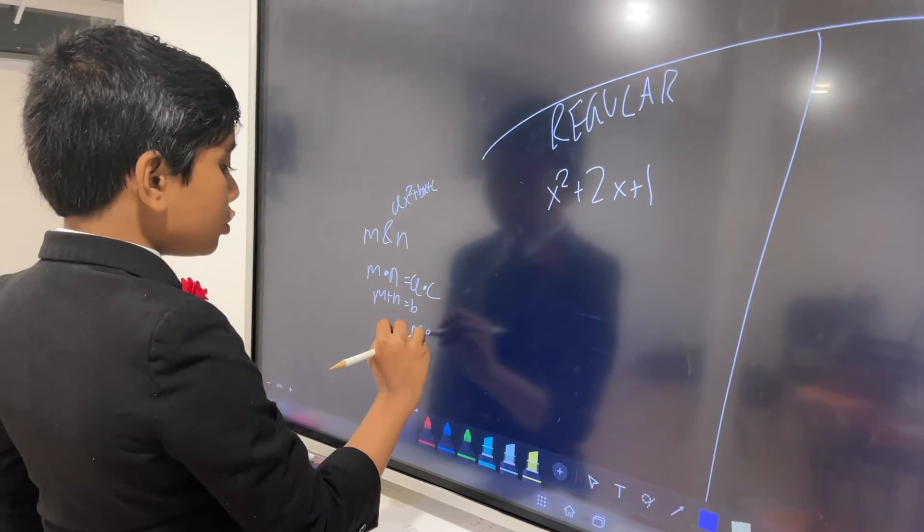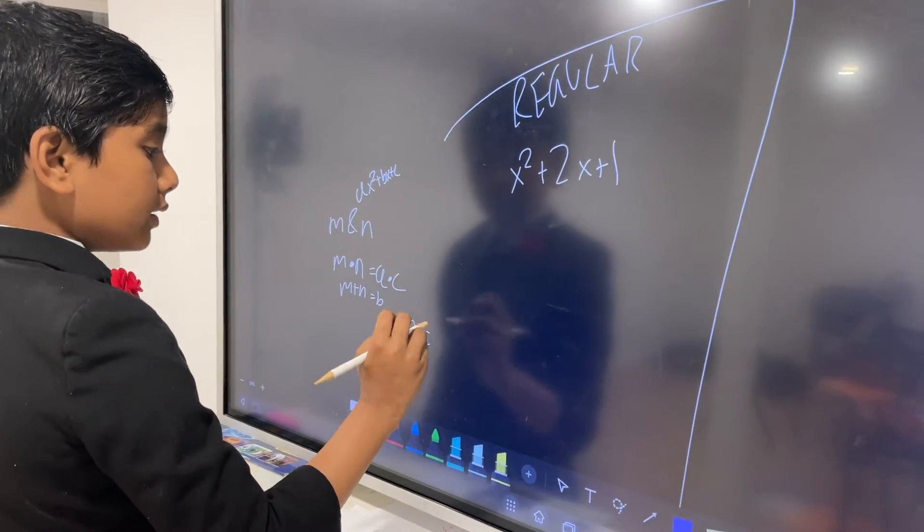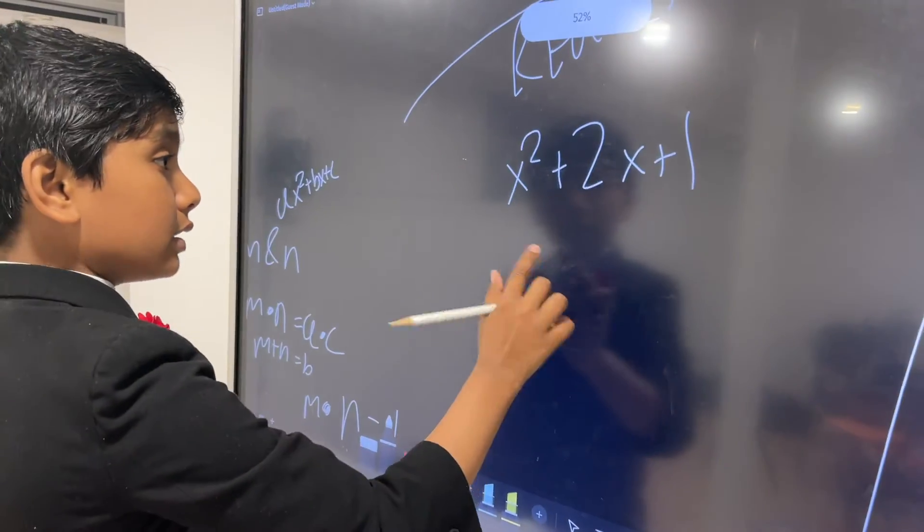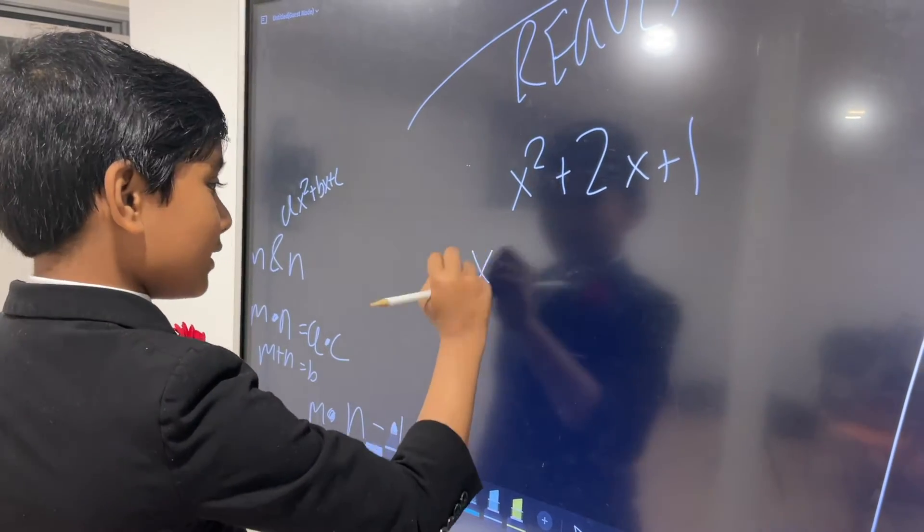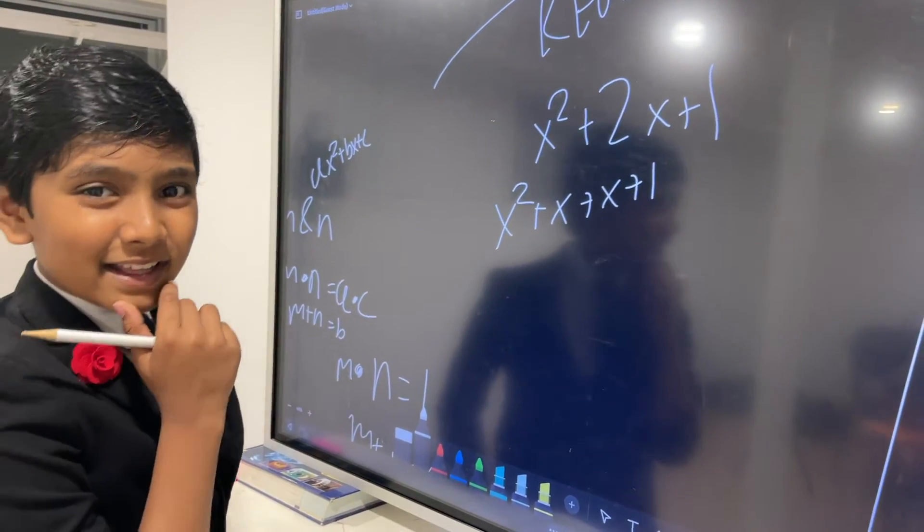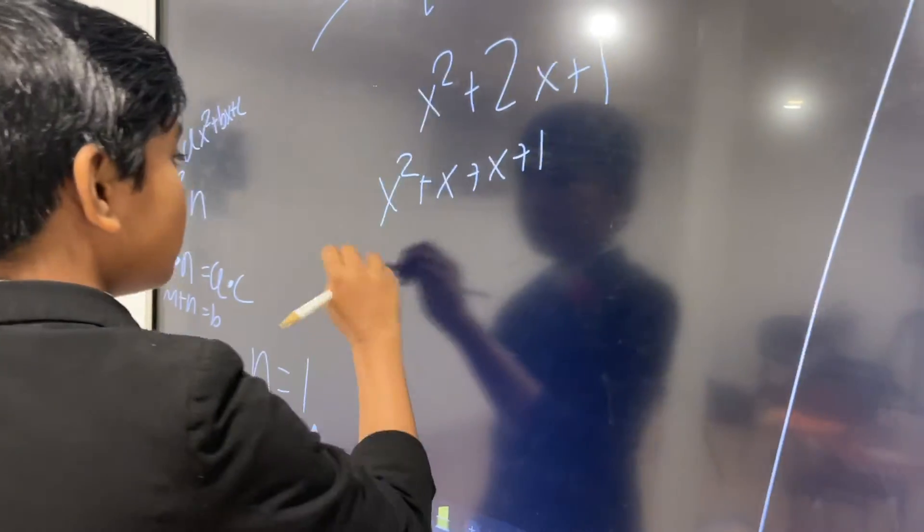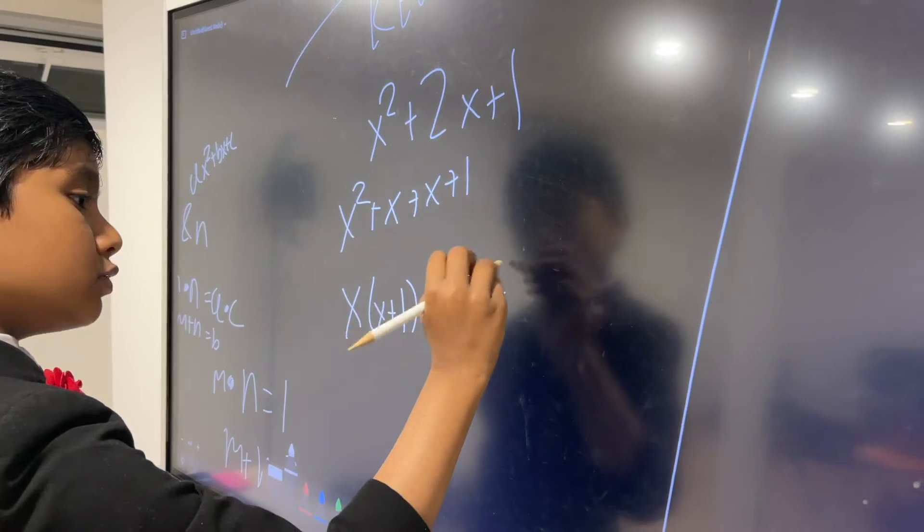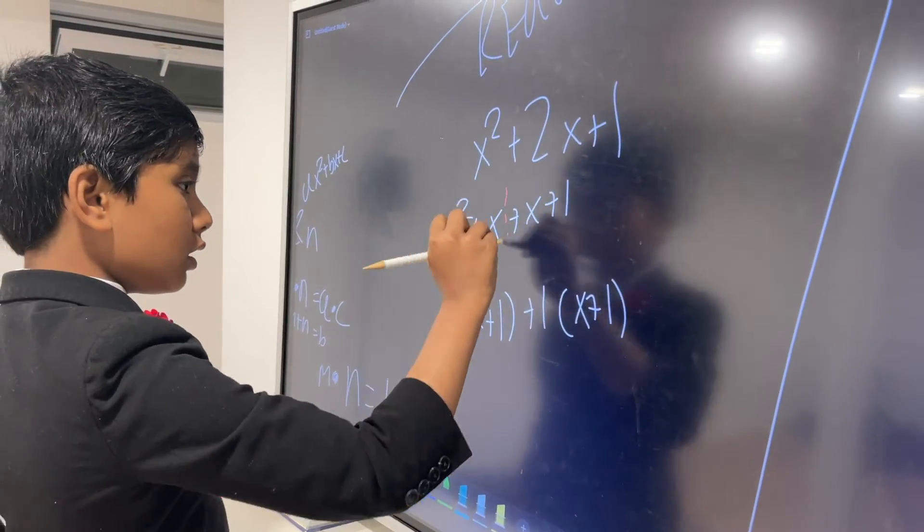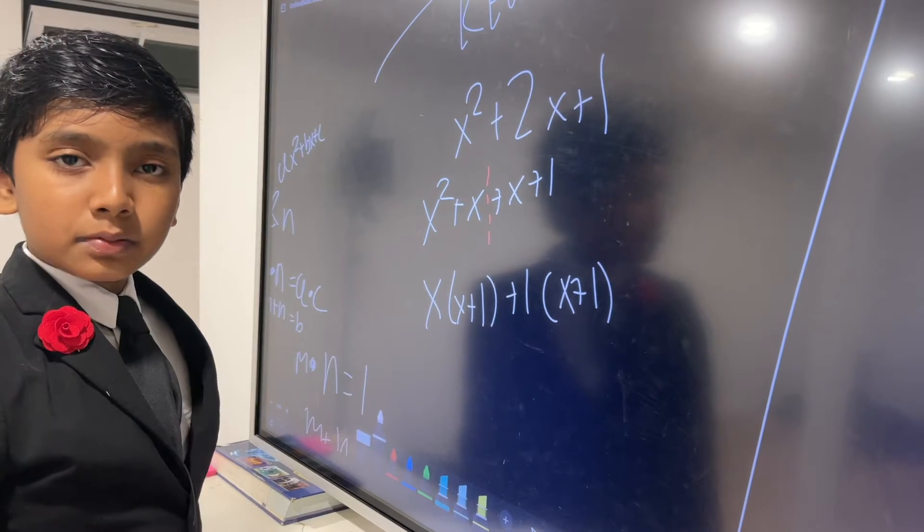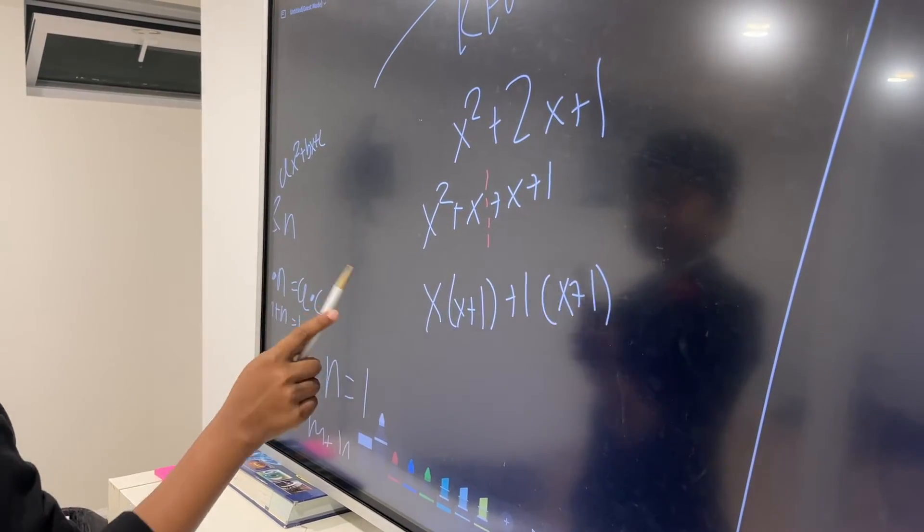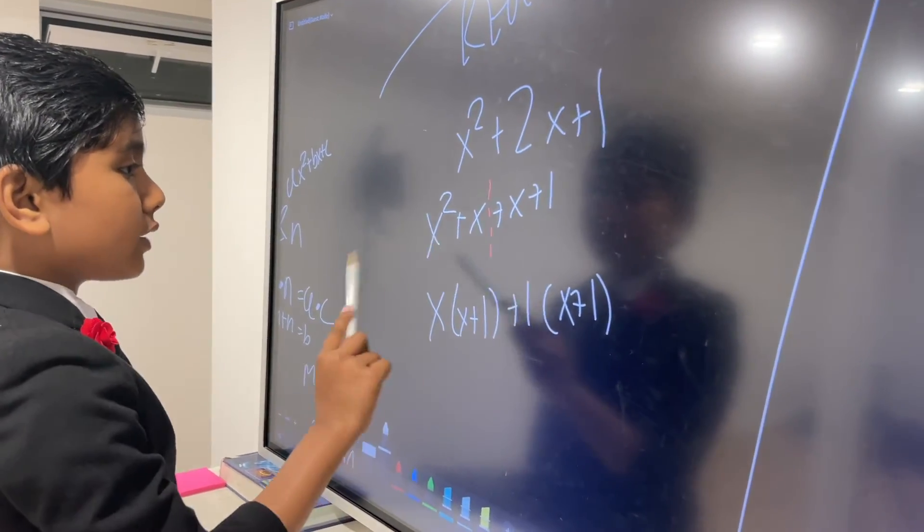So in this case, can you think of two numbers that multiply to 1 and add to 2? Well, I'll tell you, 1 and 1. Didn't think that was coming, did you? Unless you already know this stuff, or you recognize this from a sneaky little formula. So how do we get x plus 1 times x plus 1? Well, let's split this into two sections.